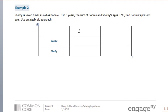And our first column is going to be now. And our second column will be in the future. Shelby is 7 times as old as Bonnie. So that means that right now Bonnie is X years old. And Shelby is 7 times X.